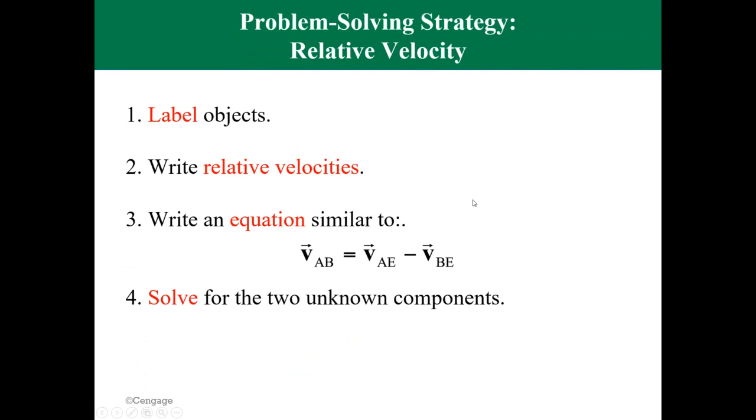The strategy here: you need to label the objects, write the relative velocities and write the equation similar to this equation, and then solve for the unknown component.